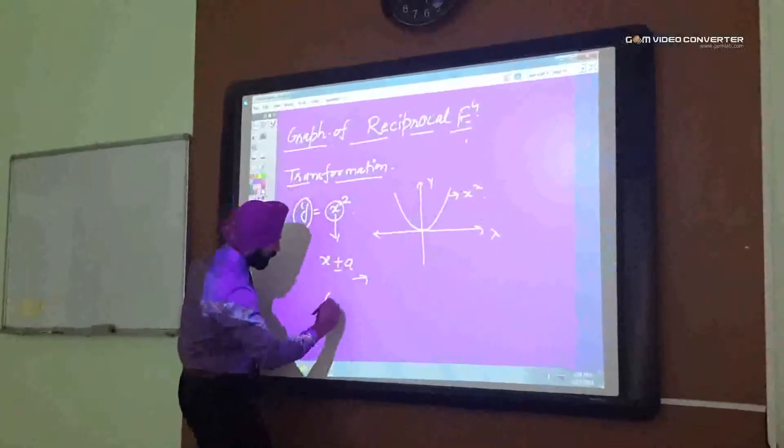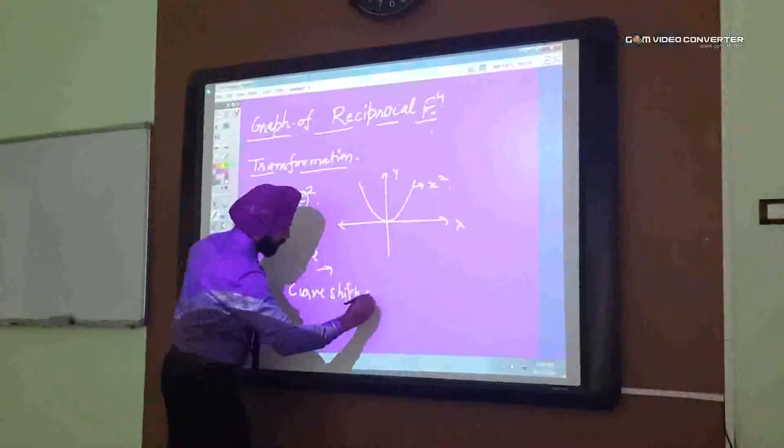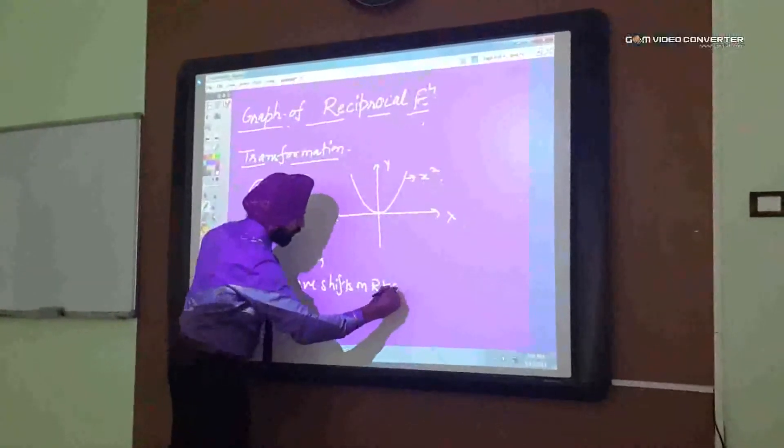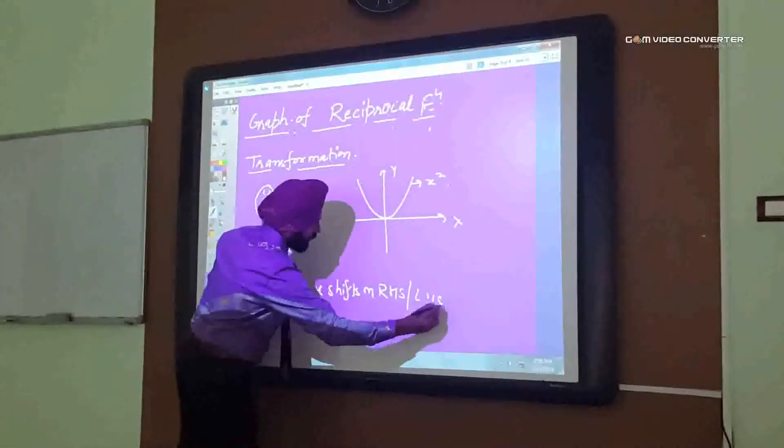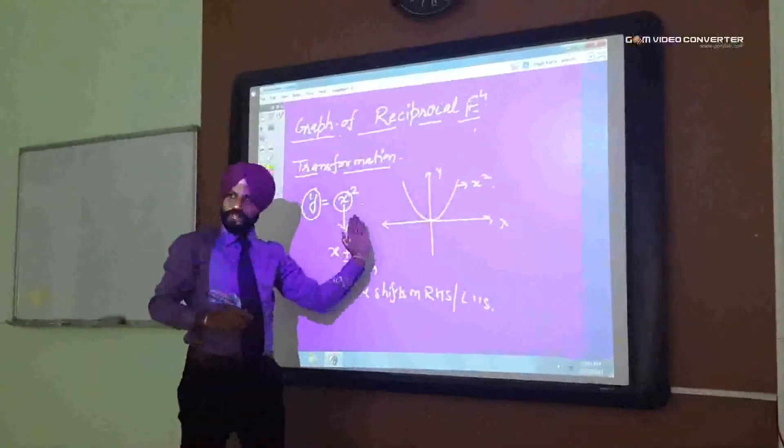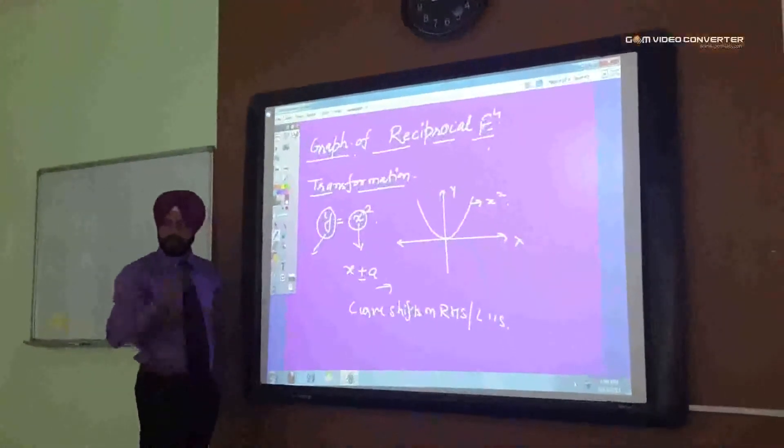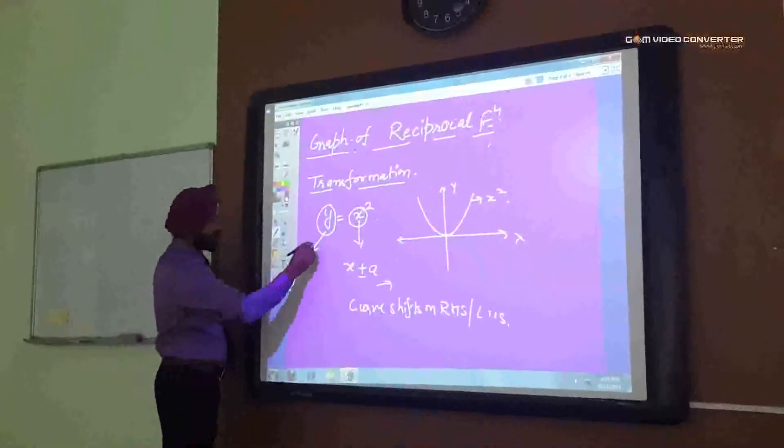Means the curve will shift on right side or left hand side, whether it will go on that side or on this side. Okay? When you change y, when you change y, so what will happen?